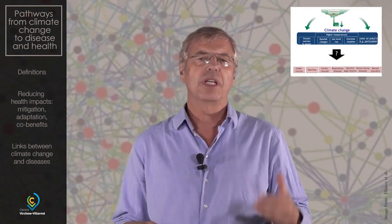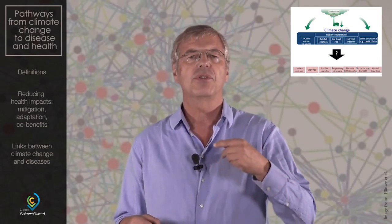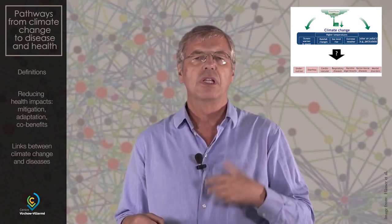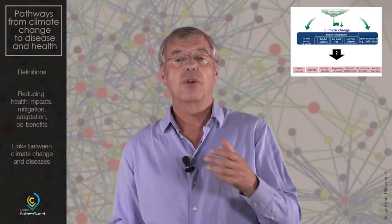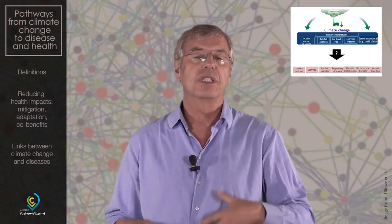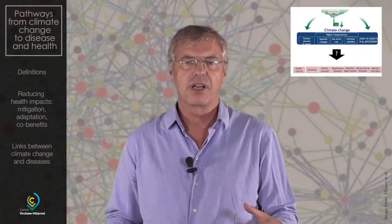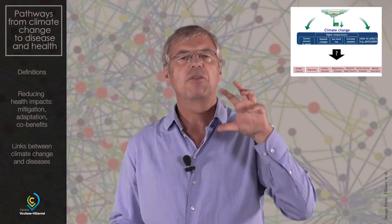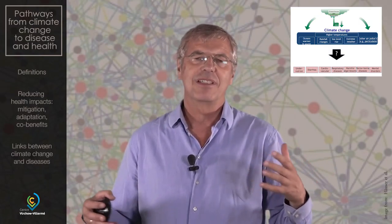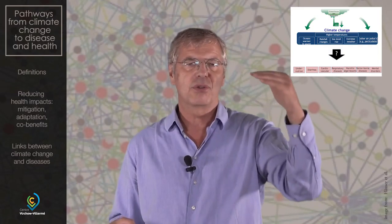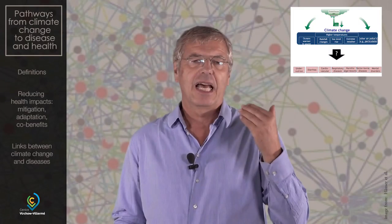Climate change has several facets: higher temperatures, rainfall, sea level rise, extreme weather. The ocean gets warmer and sourer, and air pollutants are emitted. These are the major facets of climate change. At the bottom of the graph you have the main disease groups. There are about 81 climate-sensitive diseases, and it would be too lengthy to go through all of these. So I will group them.